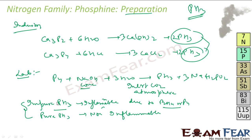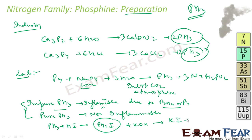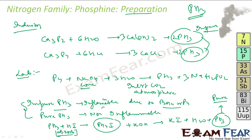To purify impure Phosphine, what we do is absorb it in HI to form Phosphonium Iodide (PH4I). Please note we use absorption here. We absorb this PH3 in HI and it forms a compound called PH4I — that is Phosphonium Iodide.